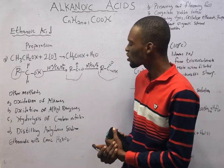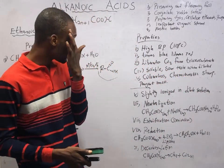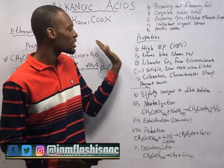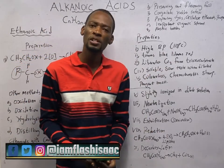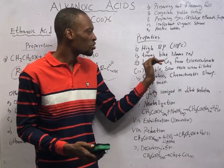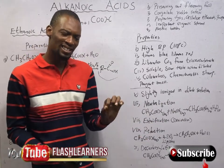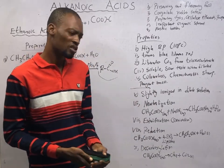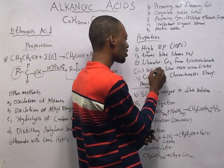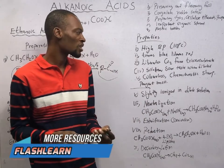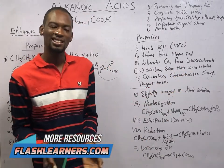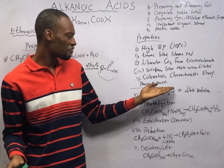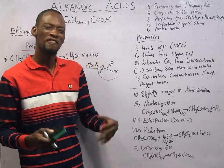Physical properties of ethanoic acid: it has a high boiling point of 118°C due to hydrogen bonding. Ethanoic acid turns blue litmus paper red, which is a typical property of acids. It liberates carbon dioxide from trioxocarbonate solution — also a property of acids. It has a sour taste when diluted, and it is colorless with a characteristic sharp, pungent smell.